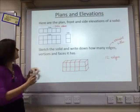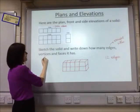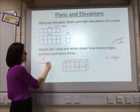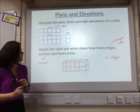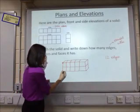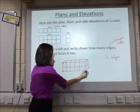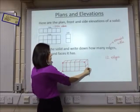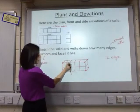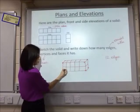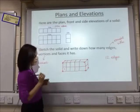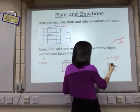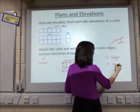Vertices is the maths word for corners when we're talking about a 3D shape. So I've got one, two, three, four on the front, and one, two, three — don't forget there's a hidden one at the back as well — so another four. That means I've got eight vertices altogether.